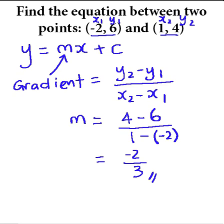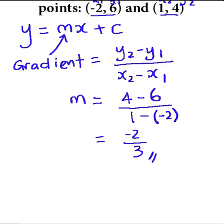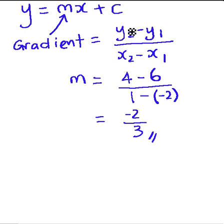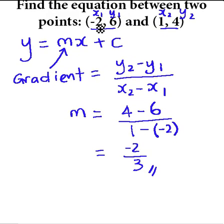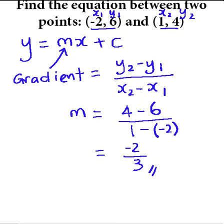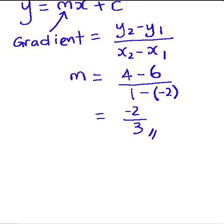Next we need to find the y-intercept c. So what we need to do is substitute -2/3 into this equation and any point between (-2, 6) and (1, 4) into this equation. So that means what we will have is...